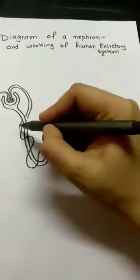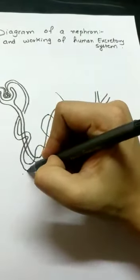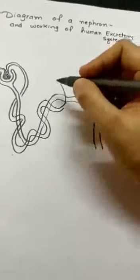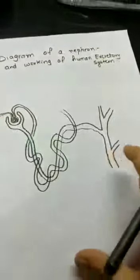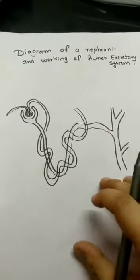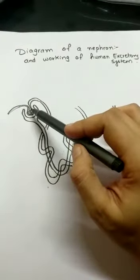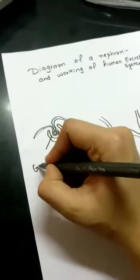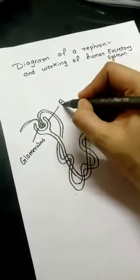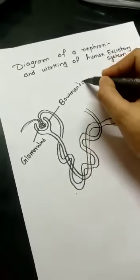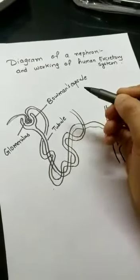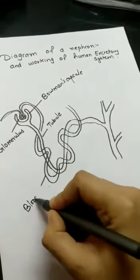Basically your diagram should appear like this. Now this is nephron and its working I also have to explain. So see, dirty blood will come, this is known as glomerulus. This we will call Bowman's capsule, this we will call tubule, this we will call blood capillaries.